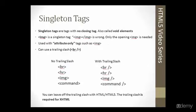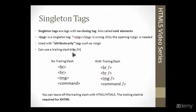Singleton tags are tags that do not have a closing tag — they can also be called void elements. An example of a singleton tag would be the image tag, the IMG tag. Having an open IMG tag and a close IMG tag is wrong; only the opening IMG is needed. These are used with attribute-only tags such as image. In HTML5 you do not need a trailing slash, though it doesn't hurt your document if you use it. If you are writing XHTML, the trailing slash is required for it to be valid.